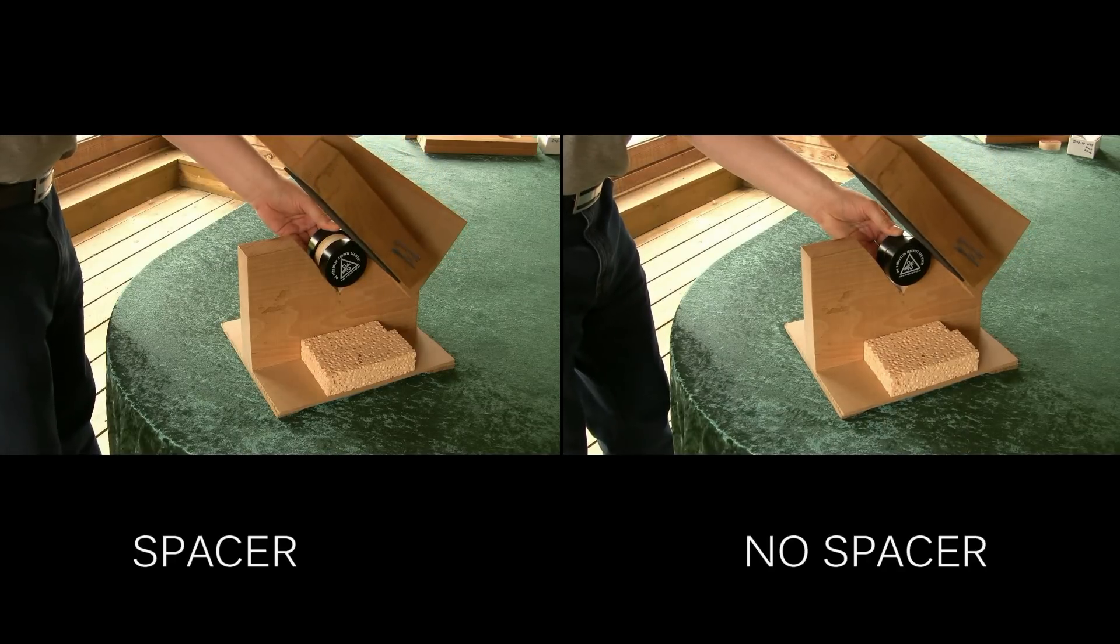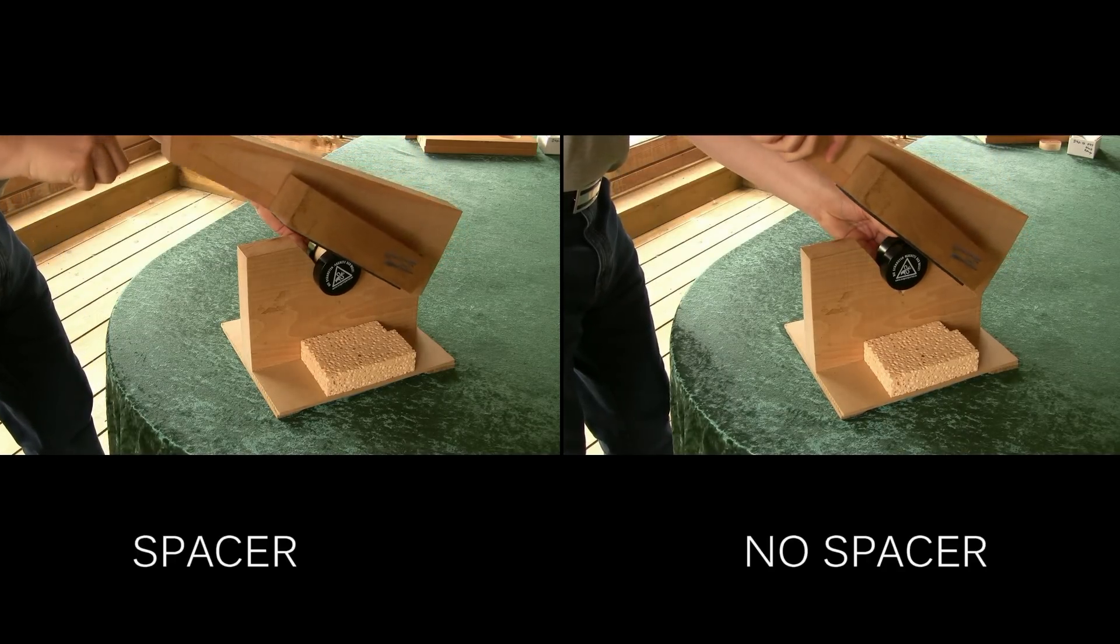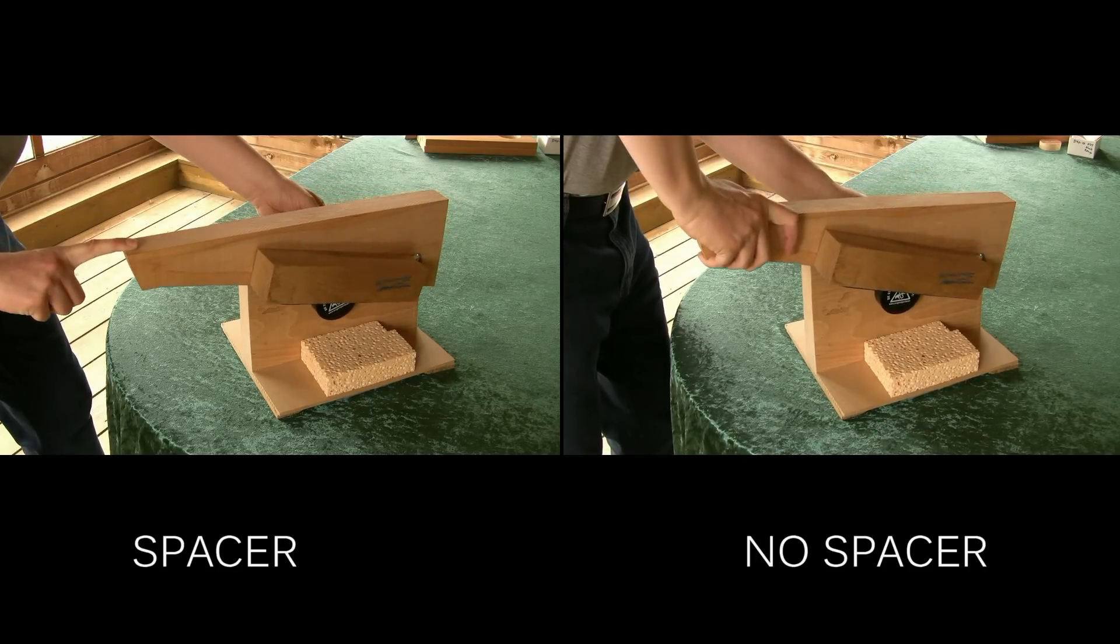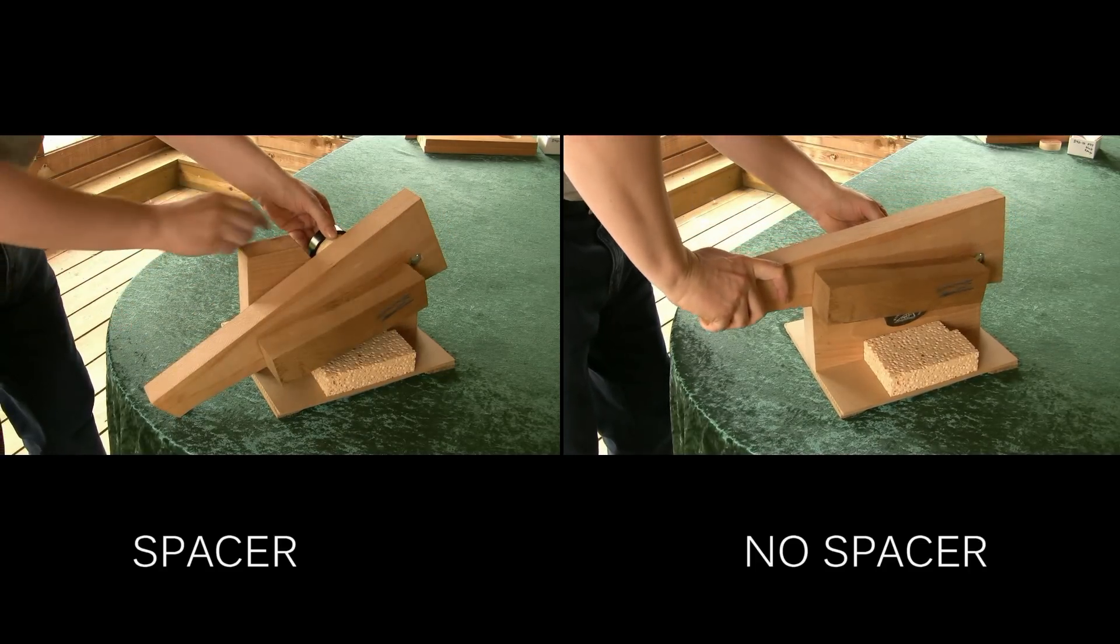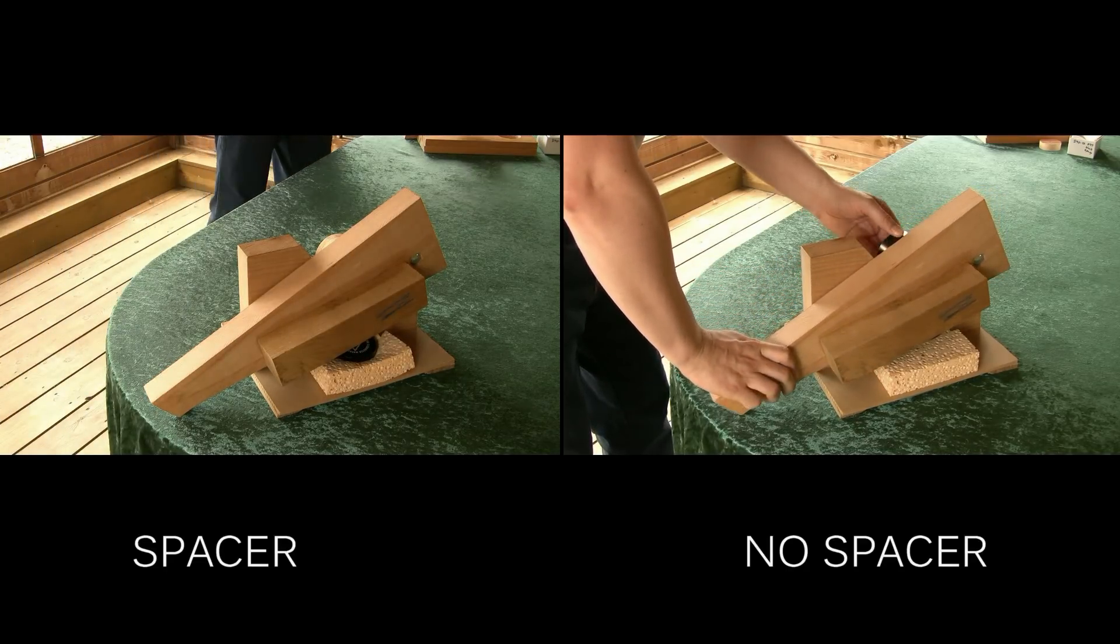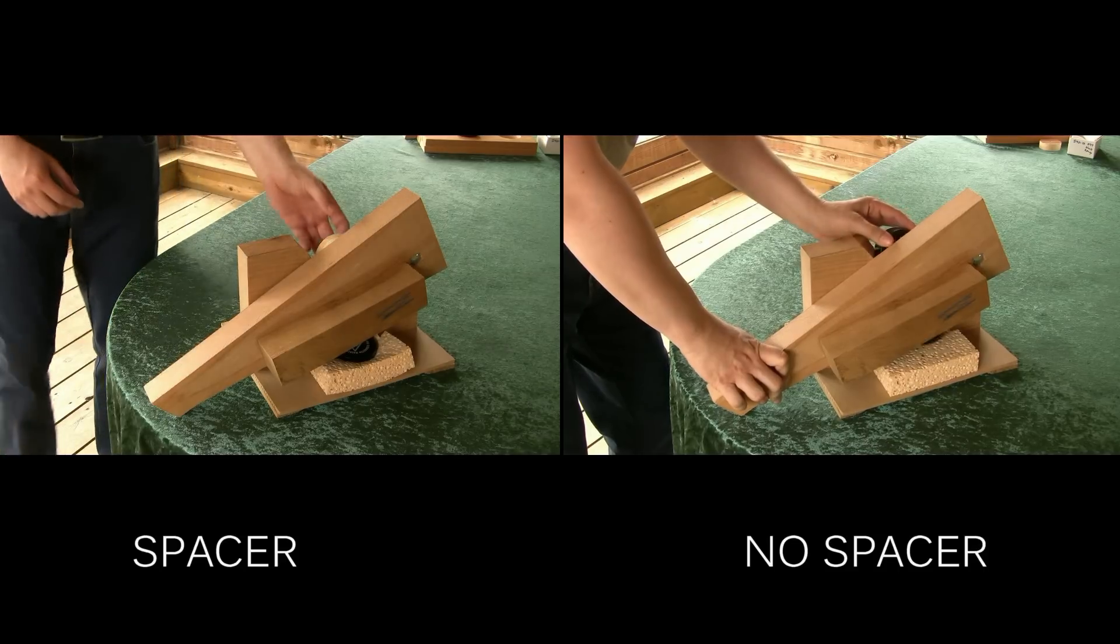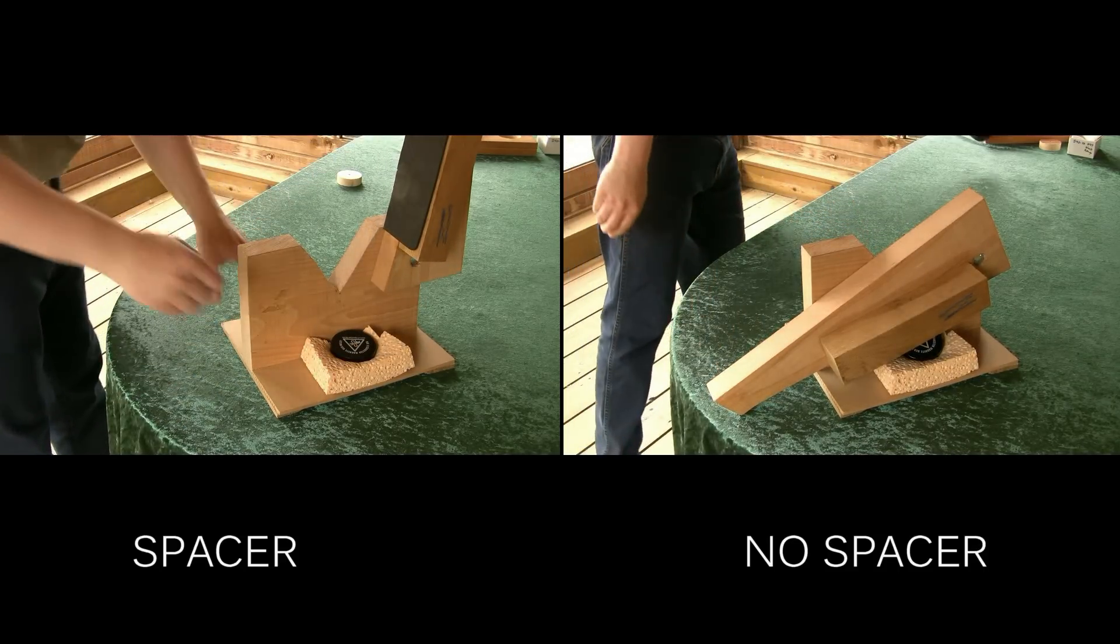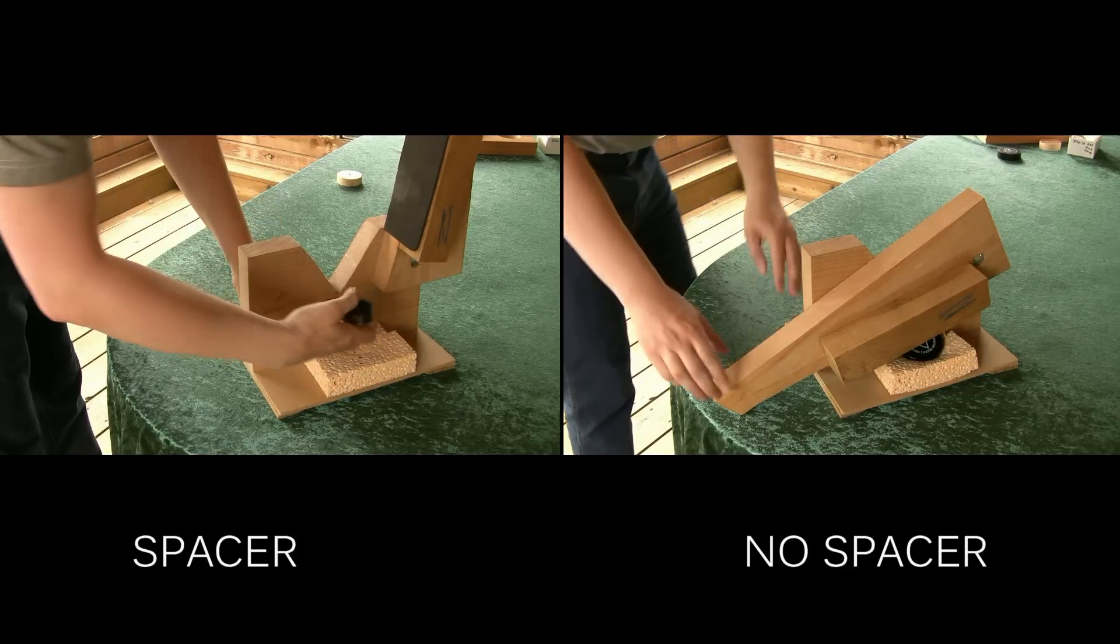So why does the spacer lower the force between the magnets so much? After all, it's only two centimeters of wood between the magnets. Well, the force between a single magnet and a piece of iron follows the inverse square law. If you double the distance, the force drops to a quarter. With two magnets the force doesn't drop that fast with distance, but still quite much.